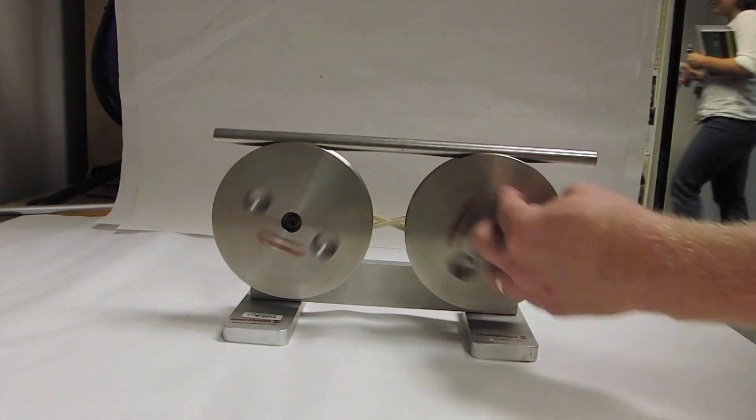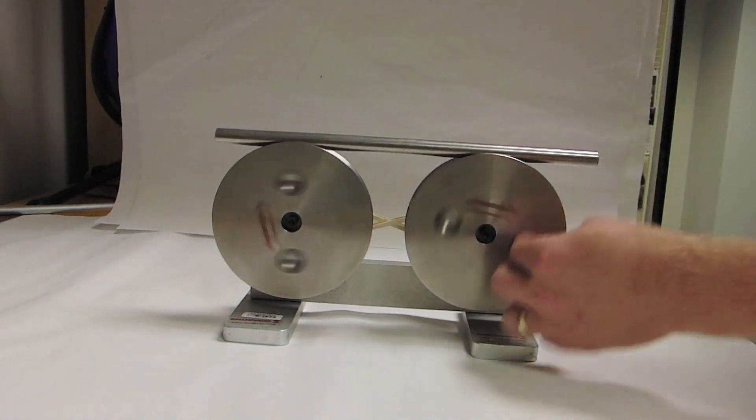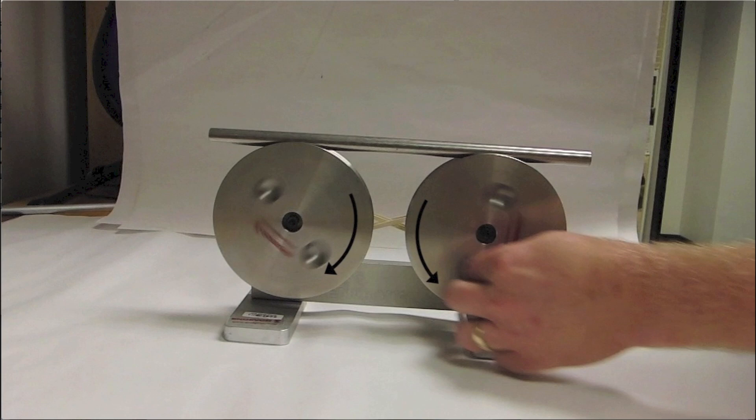As the discs rotate, there's kinetic friction between the rotating discs and the rod. When the system is in equilibrium, the rod is at rest.